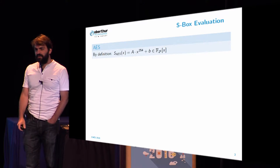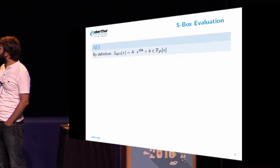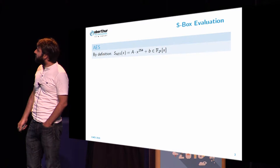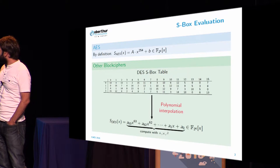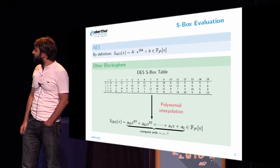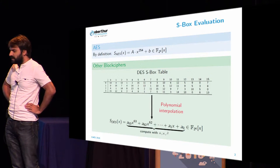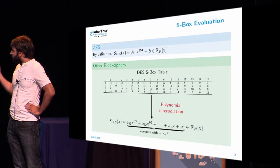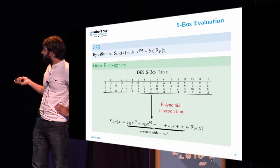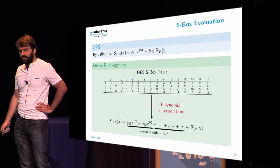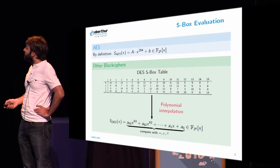S-box refers to a common way to evaluate the non-linear part of block ciphers through lookup tables, but they are generally defined as a polynomial like in the AES case. If it's not the case, we can use polynomial interpolation to describe the S-box with a polynomial. The operations needed to evaluate the polynomial are XOR, multiplication, and square, and the most time-consuming operation is the multiplications. This is the one we will focus on in this presentation.